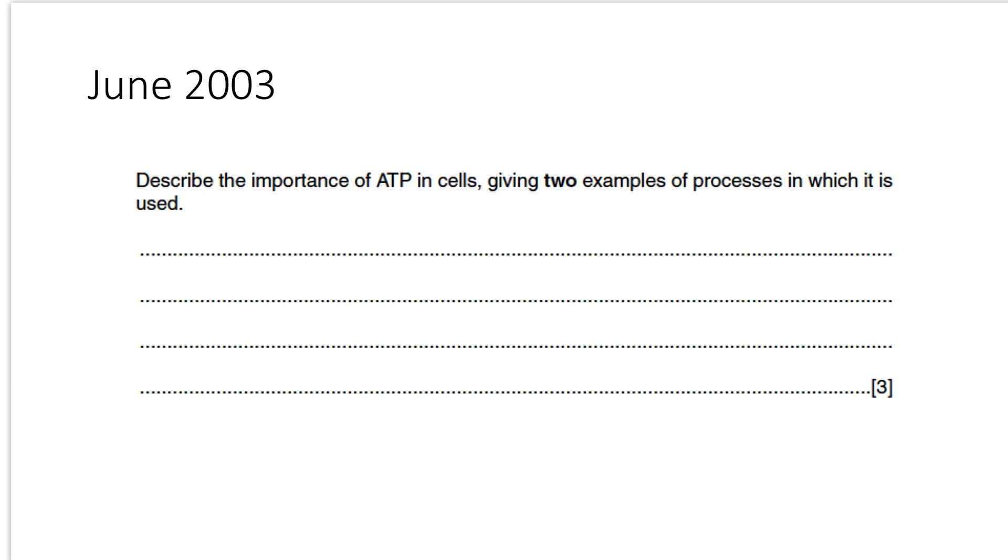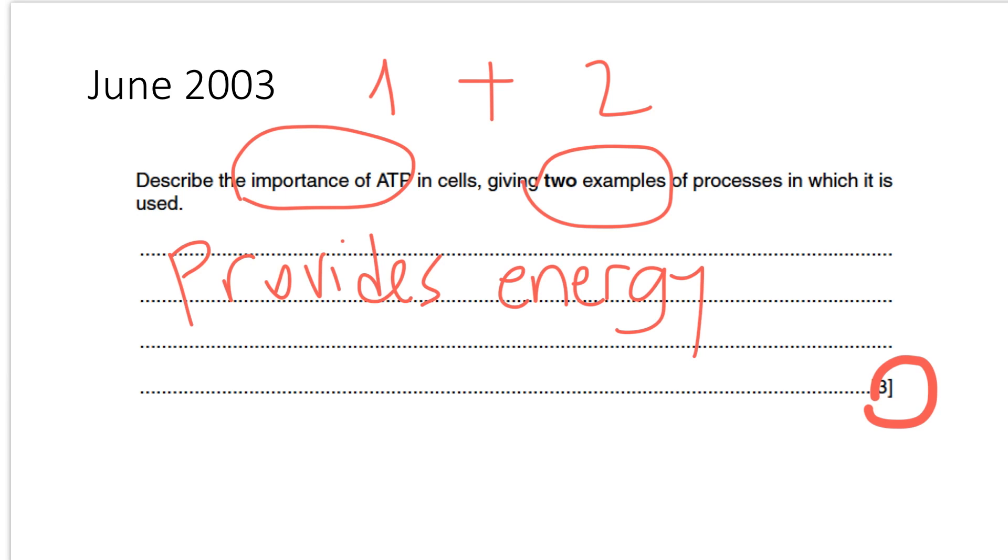Let's check out a question from June 2003. Describe the importance of ATP in cells, giving two examples of processes in which it's used. First, check how many marks the question is. Three marks. You need to provide three key pieces of information: the importance of ATP, one mark, and two examples, making three total. What's the importance of ATP? Very simple, ATP provides energy. You can provide any two examples of forms of work we listed in the beginning of this video, such as protein synthesis, DNA replication, active transport, muscle contraction, transmission of nerve impulses, anything, any of the two.